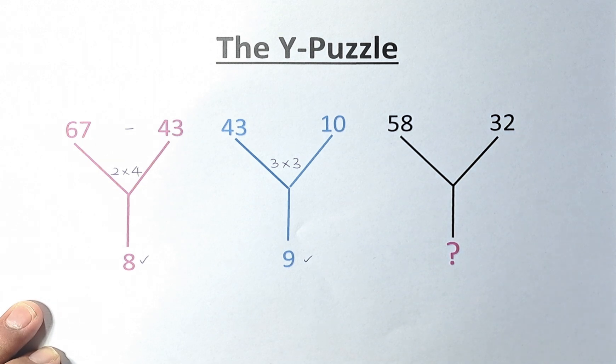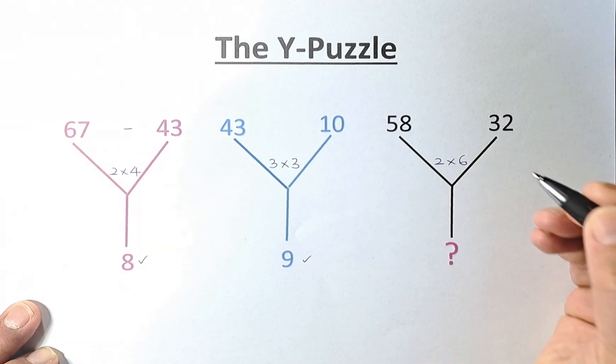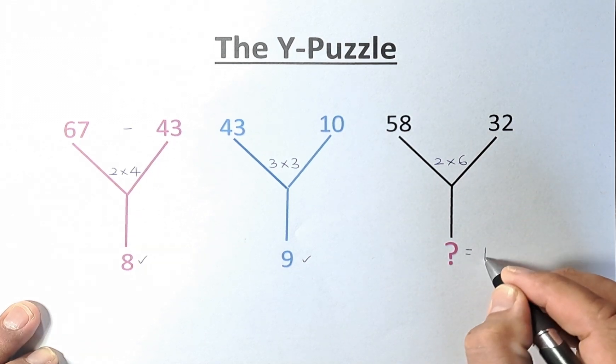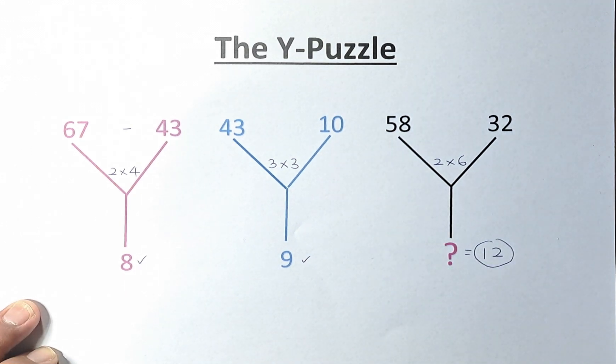And last but not least, we have 58 and 32. 58 minus 32 is going to be 26. And then 2 multiplied by 6, and the question mark is going to be equal to 12 because 2 times 6 is equal to 12.